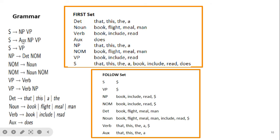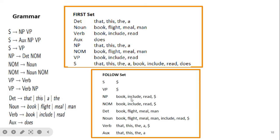For the follow sets, Follow(S) = {dollar} since S does not appear on the right-hand side. After VP nothing is present, so Follow(VP) = Follow(S) = {dollar}. For Follow(NP): in the rule with NP followed by VP, we take First(VP) = {book, include, read}; where NP appears with nothing after it, we take Follow(VP) = dollar. So Follow(NP) = {book, include, read, dollar}. For Follow(nominal), nominal appears in NP rules with nothing after it, so we take Follow(NP) = {book, include, read, dollar}.